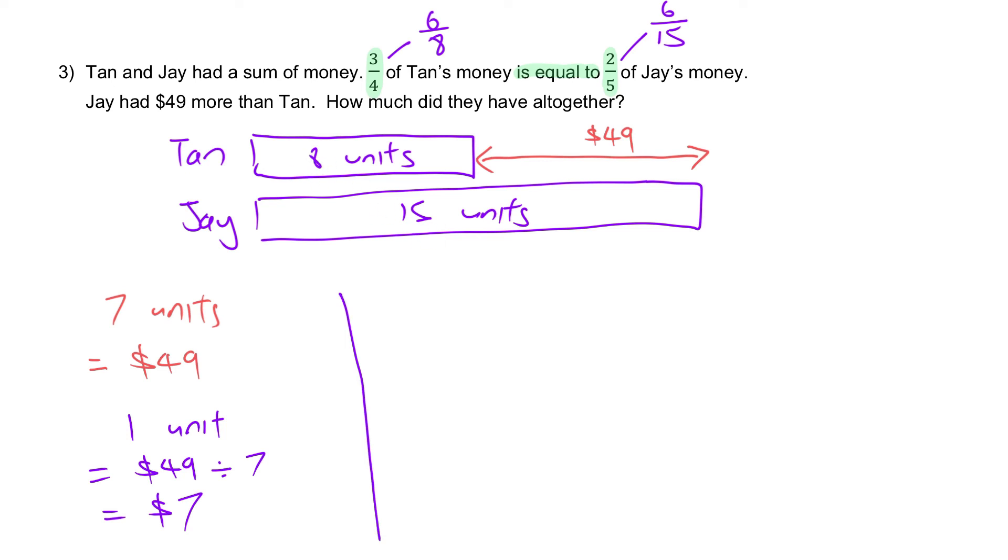How much did they have all together? They have 23 units. So amount of money, this is for one unit, they have 23 in total, that would be 140 plus 21, $161.